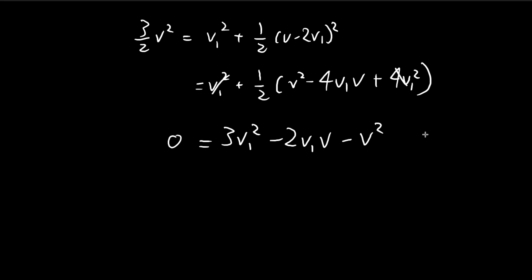Now we can factorize this. So if you're familiar with this, you can use the cross method. Otherwise, you can use your calculator to deduce what it is. But you can factorize this as 3v1 plus v multiplied by v1 minus v.